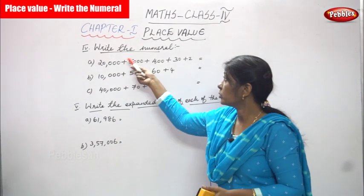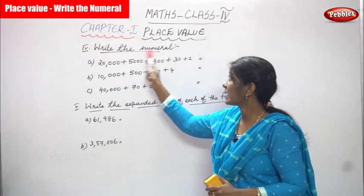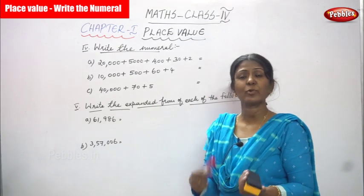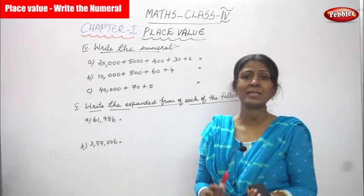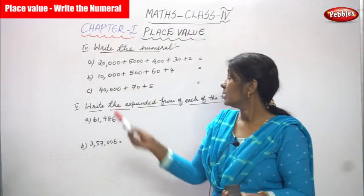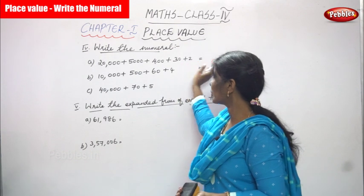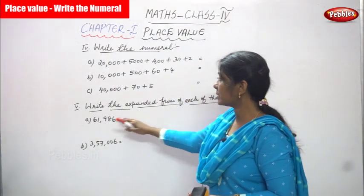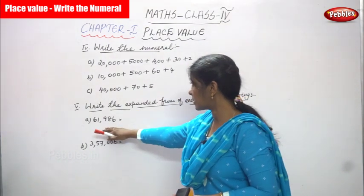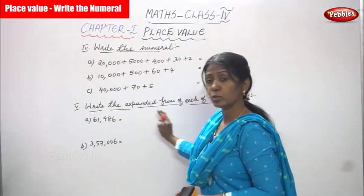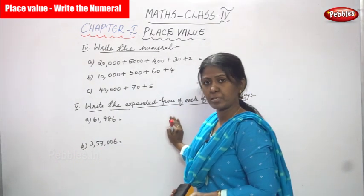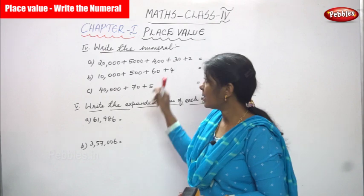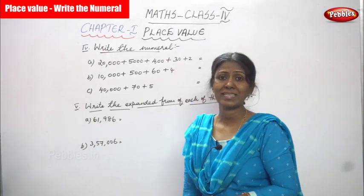Now we are going to do Roman number four - write the numerals. Numerals means you have to write the numbers. This is the expanded form; you have to write the word simple form. And after that, this is the word simple form and you have to write the expanded form. This is Roman number five - you have to expand it, and Roman number four - you have to write in simple form.